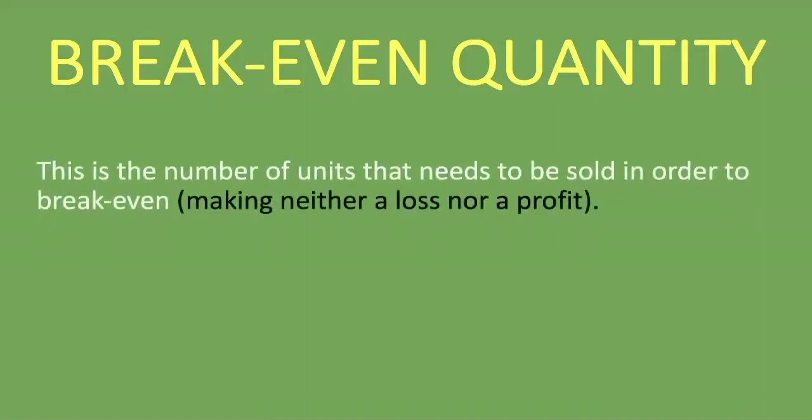So what is the break-even quantity, or break-even units? It is the number of units that needs to be sold in order to break even — that is, making neither a profit nor a loss. When you calculate the break-even quantity, you are calculating how many units you need to sell in order to not make a loss nor a profit. That is the break-even quantity or break-even units — remember, it's the number of units.